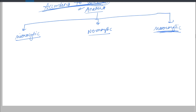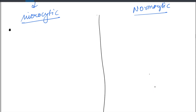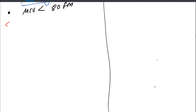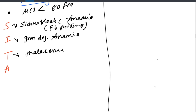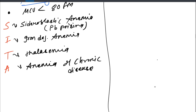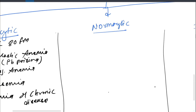In microcytic anemia, MCV is less than 80 femtoliters. You can memorize the causes with the mnemonic SITA: S — sideroblastic anemia (seen in lead poisoning); I — iron deficiency anemia; T — thalassemia; A — anemia of chronic diseases. These are the four major categories in which microcytic anemia is seen.